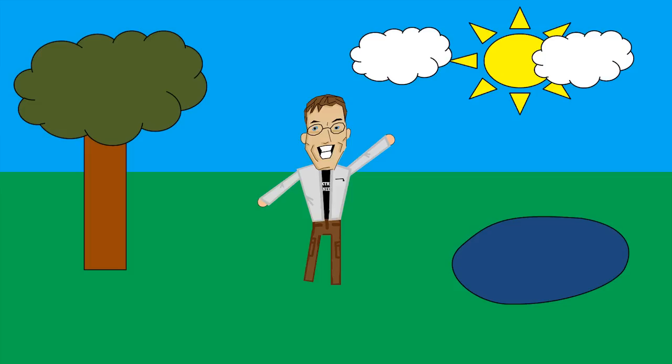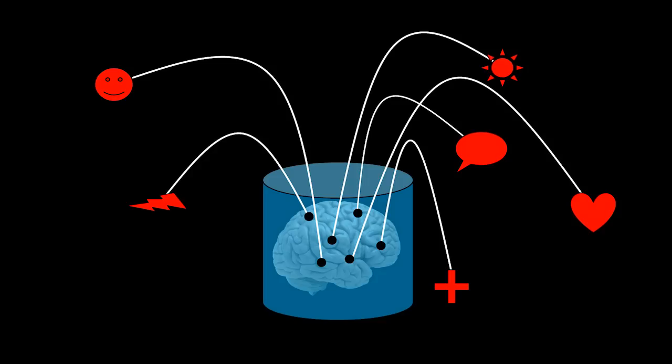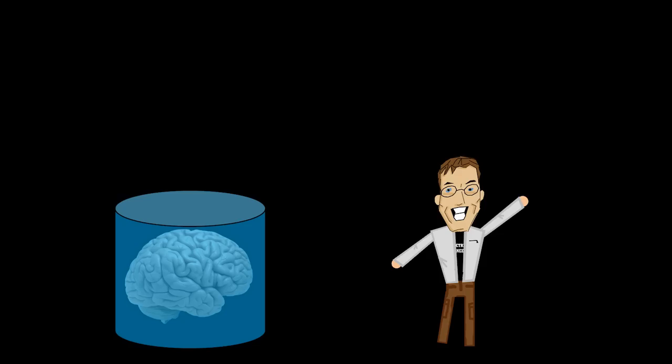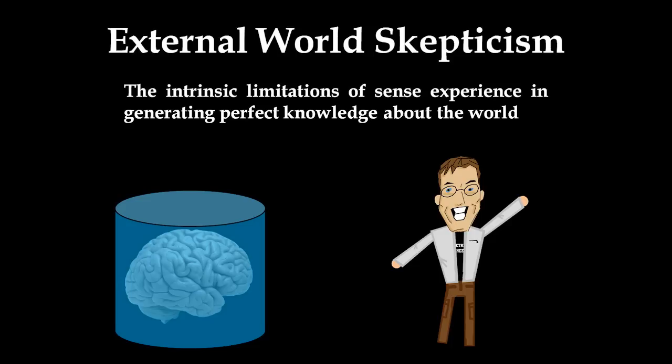I might be a fully functional human being in a real physical world, or I might just be a brain in a vat plugged into the matrix. I simply do not know, and what's more, I can't know. No amount of observation or deduction can ever truly differentiate between these philosophical possibilities. That's what makes external world skepticism one of the greatest pains in the backside of philosophers to this day.